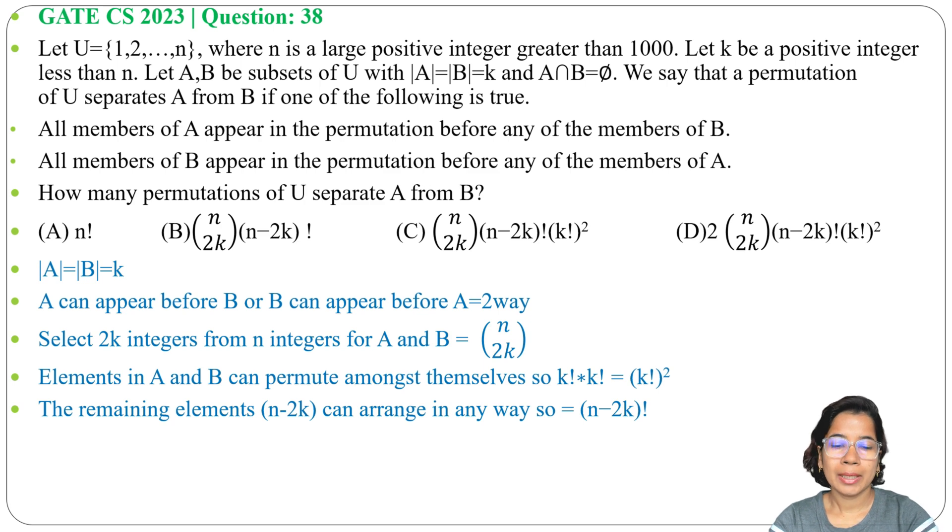So A and B can appear in two ways. We can choose 2k elements for A and B from U in C(n,2k) ways. Elements of A can permute themselves and elements of B can permute themselves, so it is (k!)². And the remaining elements that we are not choosing for A and B can arrange in (n-2k)! ways.